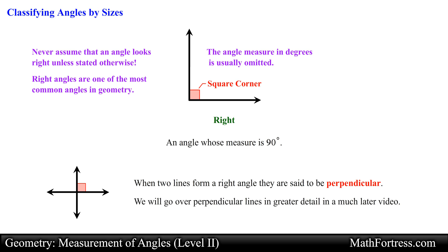We will go over perpendicular lines in greater detail in a much later video. For now, it is sufficient to understand that perpendicular lines form right angles. So the rays or line segments that form a right angle are also said to be perpendicular. Sometimes the words orthogonal and normal are also used to describe lines that form right angles. In this course, we will use perpendicular.